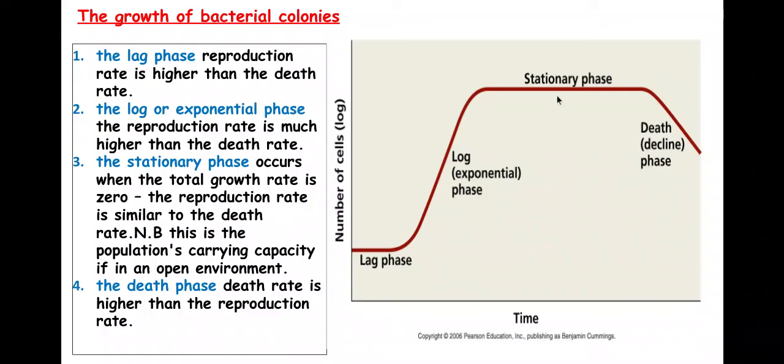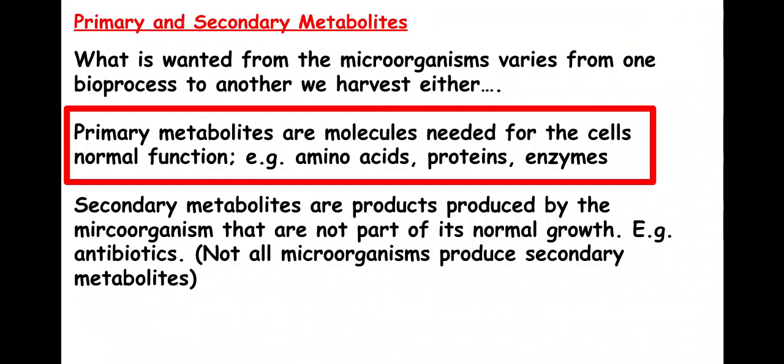The stationary phase is where the growth rate is zero, so the reproduction rate is similar to the death rate. Then in the death phase, the death rate is higher than the reproduction rate. There are different things produced at different parts within the growth.